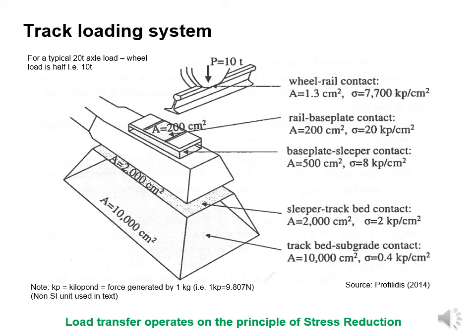Let's look at the track loading system and the load path. The wheel is in contact with the rail, the rail is in contact with the base plate, which is in contact with the sleeper, and the sleeper is in contact with the track bed, which is in contact with the subgrade. Load transfer operates on the principle of stress reduction.